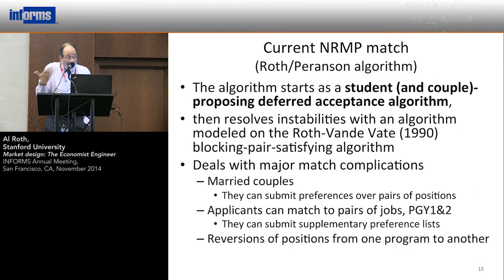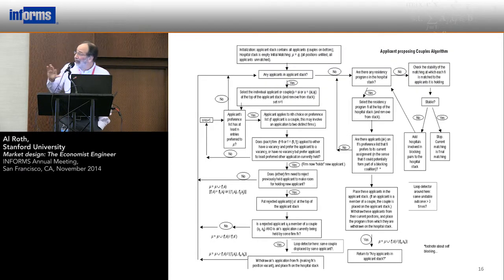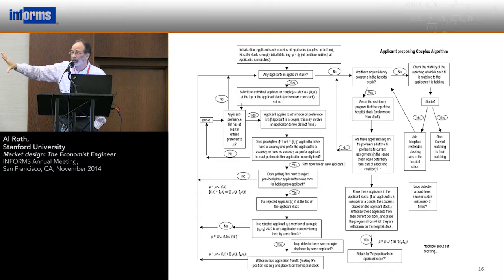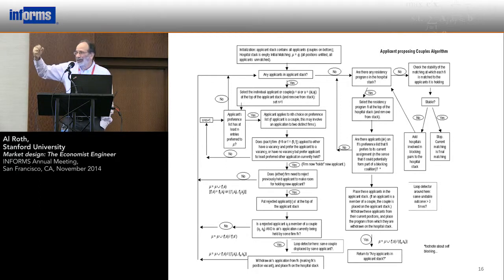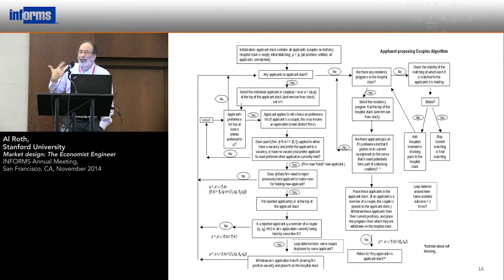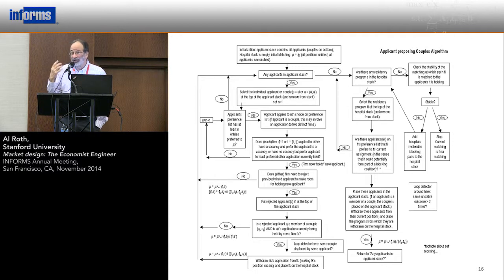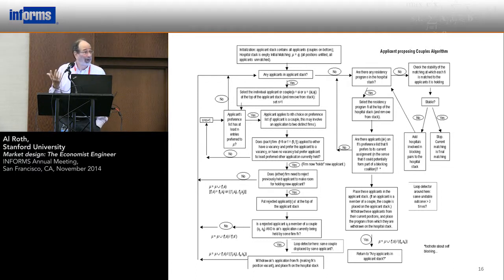Instead we're going to have a multi-pass algorithm. Loosely speaking, the left part of the flowchart is the standard deferred acceptance algorithm. The right part says: every time we pull some member of a couple out of a hospital, put that hospital on a stack and remember there might be a blocking pair there. We're going to have to repair blocking pairs one by one — and that might not work, it might cycle forever because there might not be a stable match. But one of the interesting empirical observations is we virtually never observe that.